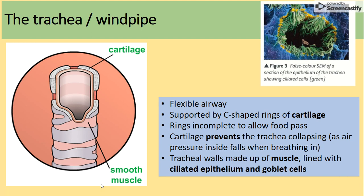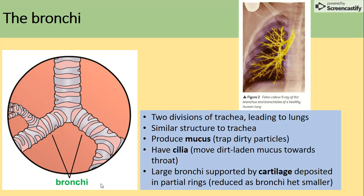The bronchi — we've got two of them, which are divisions of the trachea. They lead to the lungs and have a quite similar structure to the trachea. They produce mucus and have cilia, and are supported by cartilage rings to make sure they don't collapse.